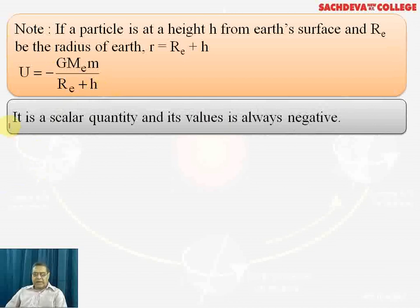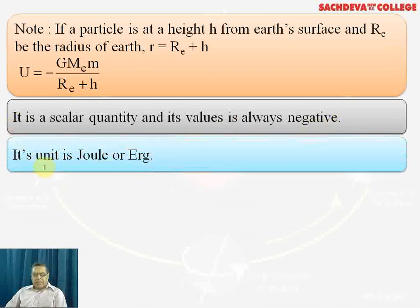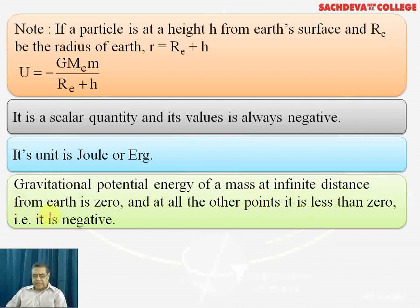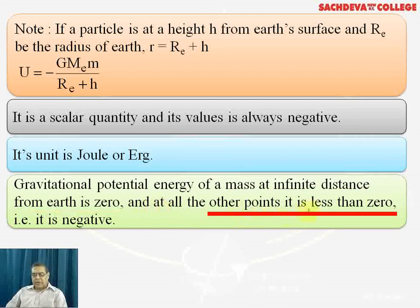Gravitational potential energy is a scalar quantity and its value is always negative. Its unit is joule. At infinite distance, r becomes infinity and the gravitational potential energy becomes zero. At all other points closer than infinity, the gravitational potential energy is less than zero, so it is negative.